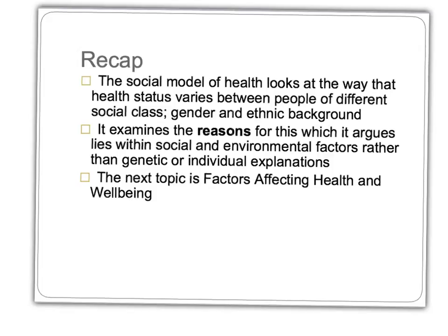To recap, the social model of health looks at the way health status varies between people of different social classes, gender and ethnic background. It examines the reasons for this, arguing they lie within social and environmental factors rather than genetic or individual explanations. The next topic will be factors affecting health and wellbeing. Thank you for watching this screencast — bring your Cornell notes and at least one interesting question to the next lesson.